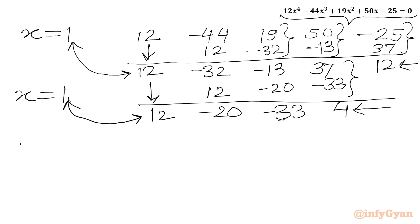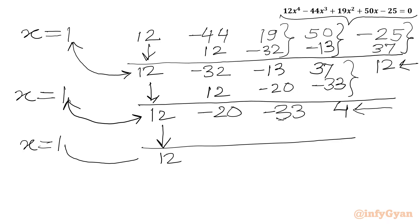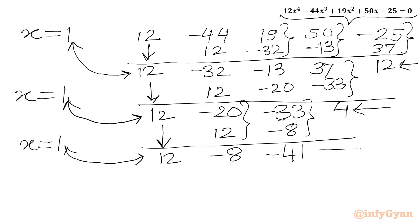We continue with Stage 3. Again, the leading coefficient 12 is written as it is. We multiply 1 with 12 to get 12; addition of those two gives minus 8. Then 1 times minus 8 is minus 8; addition of these two gives minus 41. So minus 41 is our remainder, and the remaining two numbers are the coefficients of the linear expression.